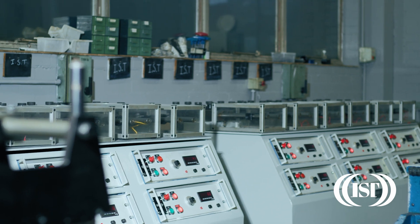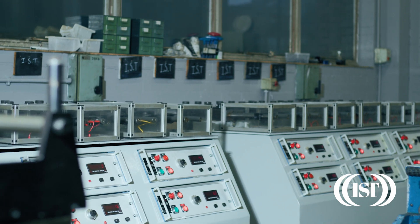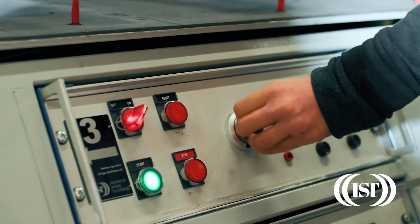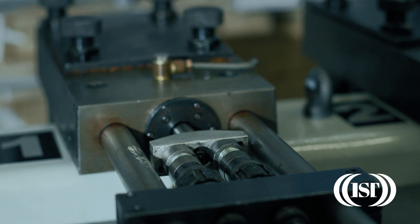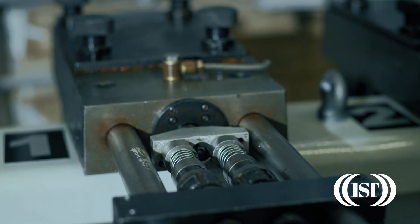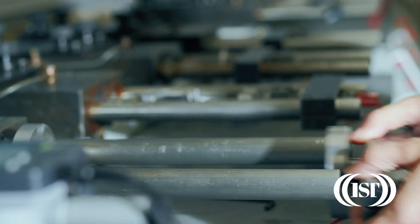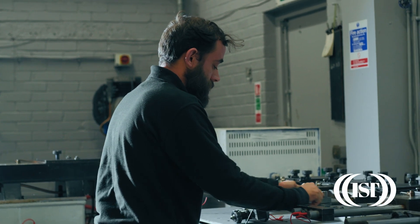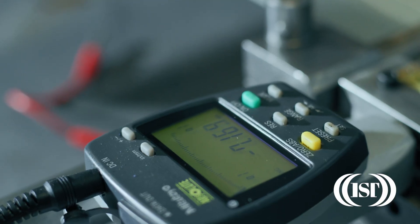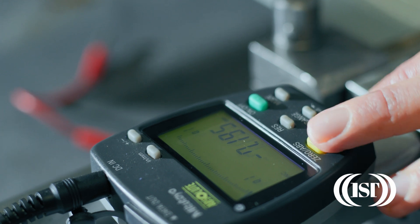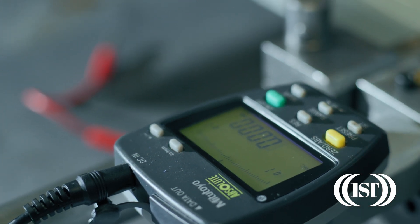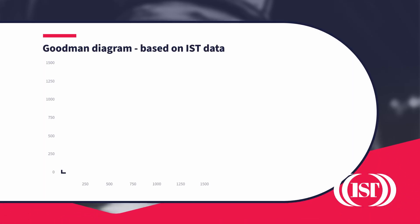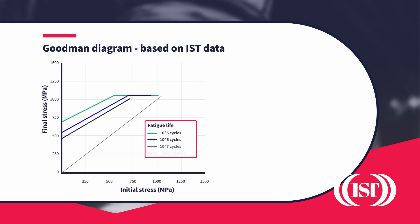Goodman diagrams are used to give us an idea of the predicted cycle life of a spring between two fixed working positions. Because material specifications have tight controls on things like wire surface quality, it's possible to have a good idea of the likely performance. Here's a typical graph — the different colored lines represent different cycle lives.